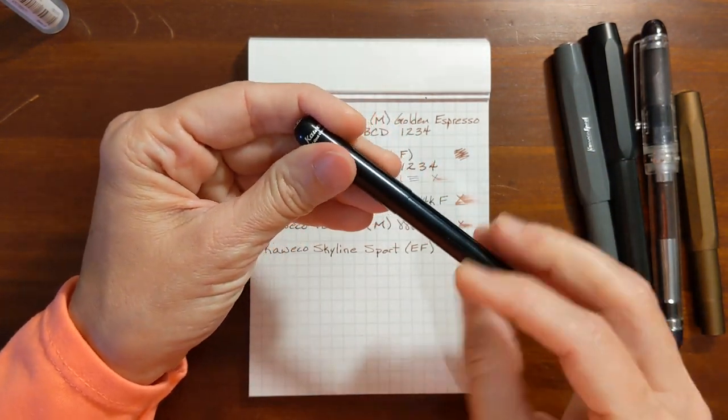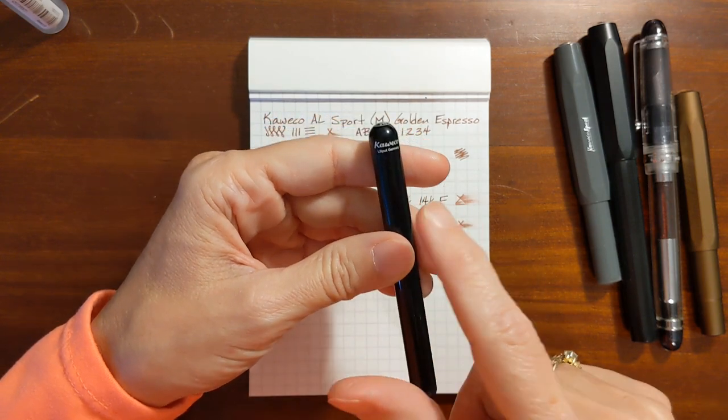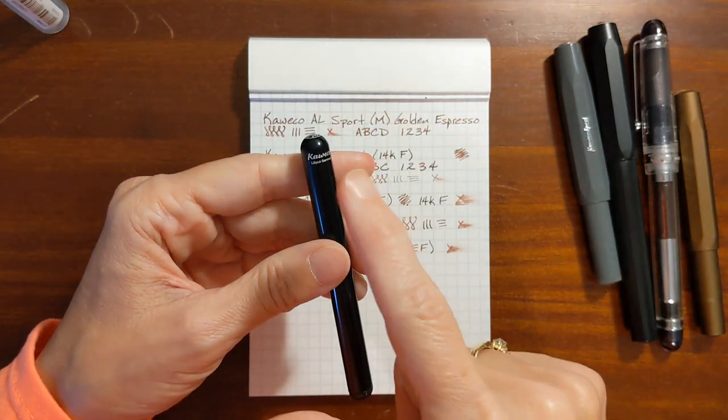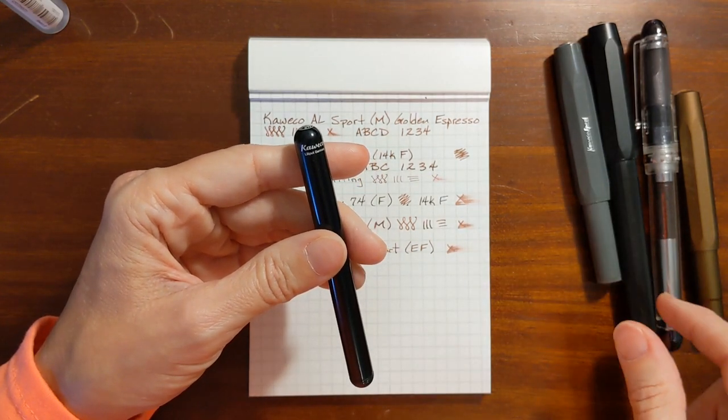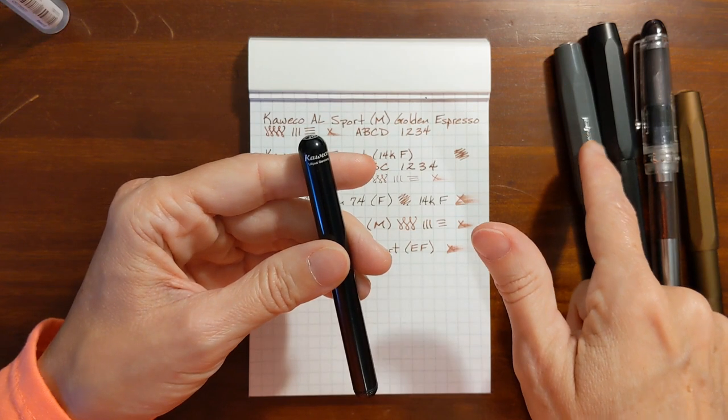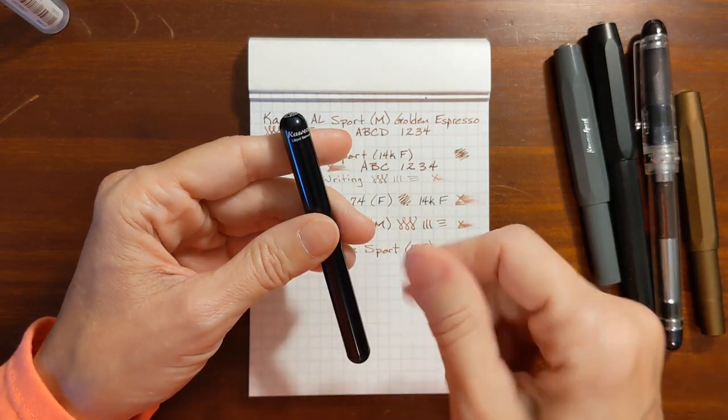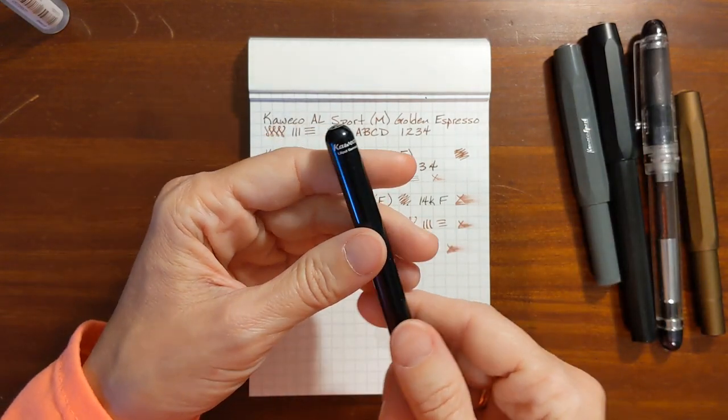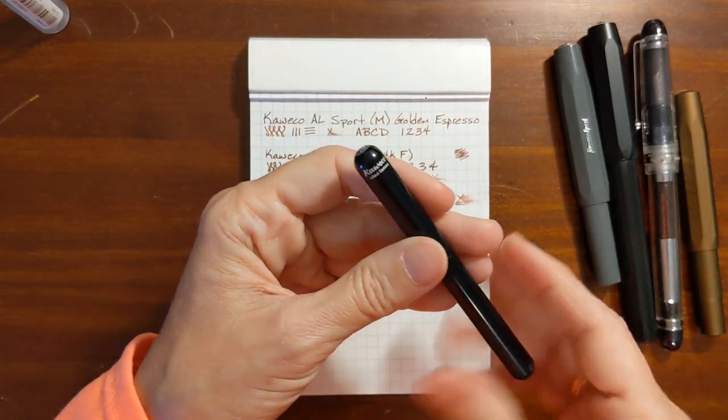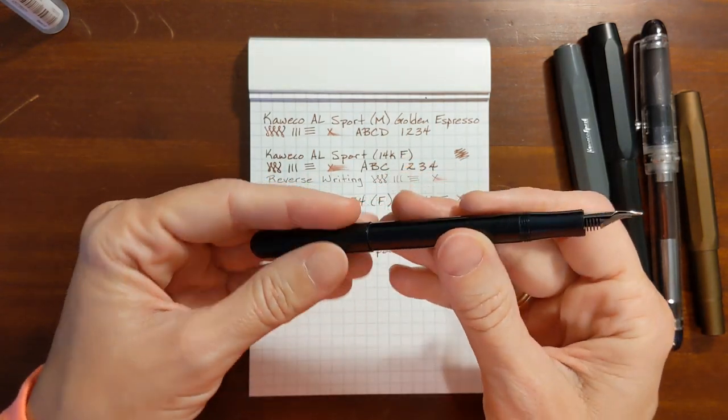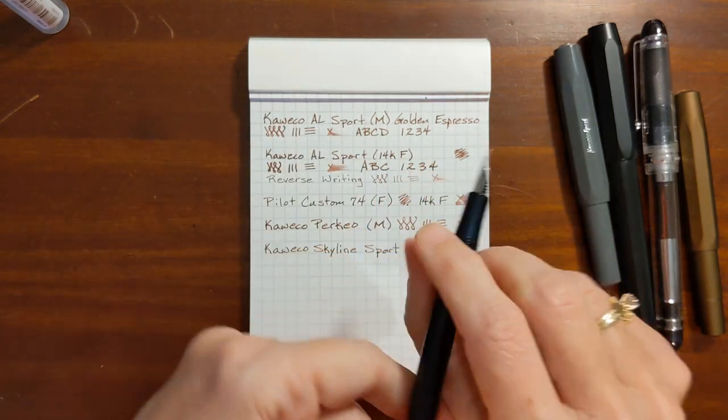Finally the nib that's given me the most trouble is the extra fine nib on my Liliput and it's interchangeable, it's got one of those nib units that screws out. The Liliput, the Skyline sport, the AL Sport, they're all interchangeable. The Skyline sport there's a little bit of difference to it, the nib unit doesn't screw out, you have to pull the whole unit out but it's the same nib in those. And this one I will post it because it's just such a teeny tiny little pen.